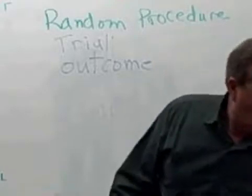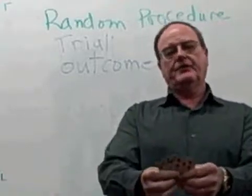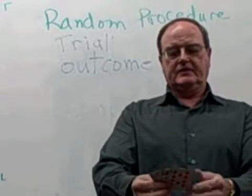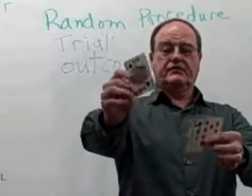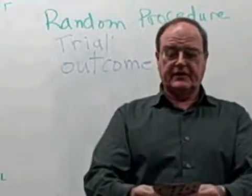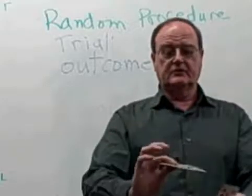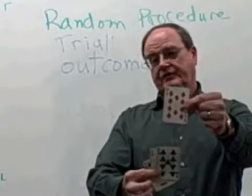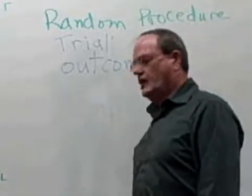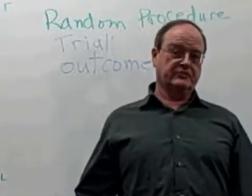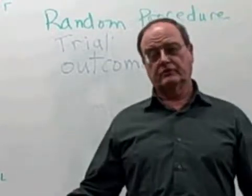When I roll a die, I have exactly six different possible outcomes: the numbers one through six. When choosing one of these four cards, if my well-defined procedure specifically asks for the suit, then my outcomes are either spades, hearts, clubs, or diamonds. When we talk about the couple having children, obviously I've got two possible outcomes: boy or girl.